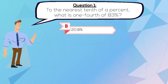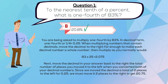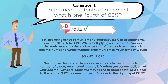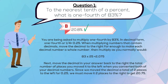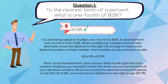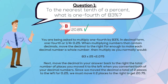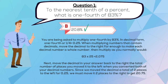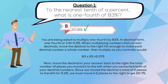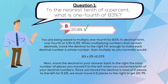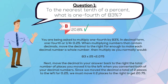The correct answer is B, 20.8%. You are being asked to multiply one-fourth by 83%. In decimal form, one-fourth equals 0.25. When multiplying numbers that contain decimals, move the decimal to the right far enough to make each decimal number a whole number, then multiply as you normally would. 83 times 25 equals 2075. Next, move the decimal in your answer back the total number of places you moved it to the left when you converted both decimal numbers. Since we moved the decimal a total of two places to the left for 0.25, we must move it two places to the right to get 20.75.